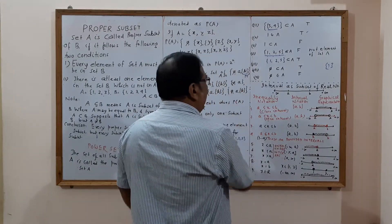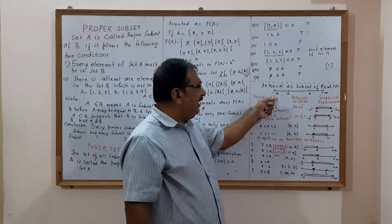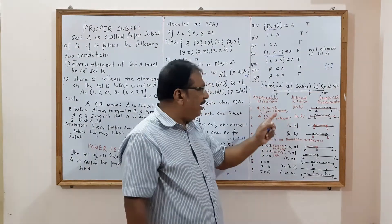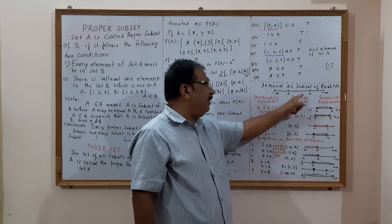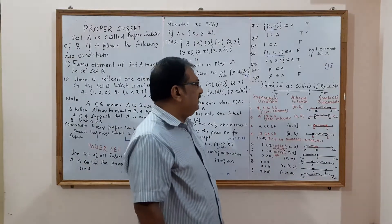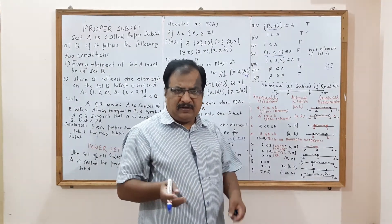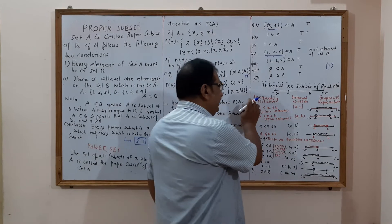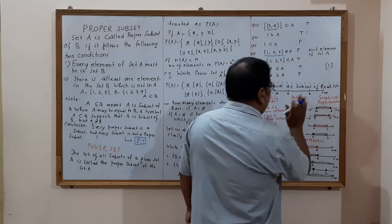Now let us have a brief look at types of intervals as subsets of real numbers. If you imagine a line segment as part of a line, in the same manner, an interval is a subset of the real number line. That means if you take two points on the number line, the segment between them is a subset of the entire real number line.